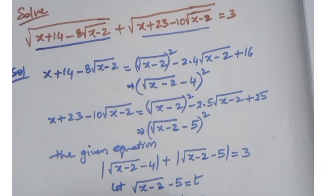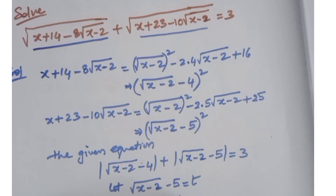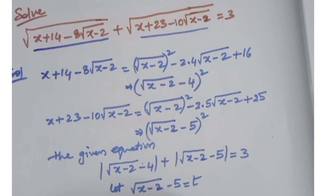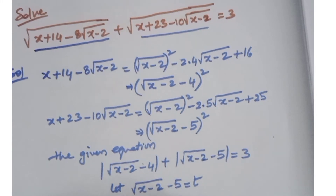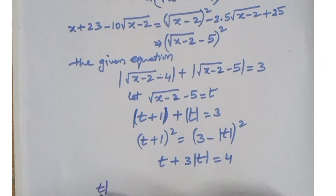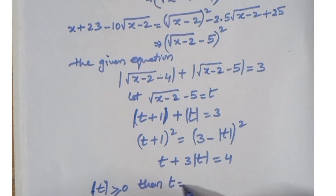Squaring both sides: t plus 1 whole square equals t plus 3 into modulus of t, which gives 4. Since modulus of t must be greater than or equal to 0, t must be greater than or equal to 0, so t equals 1.